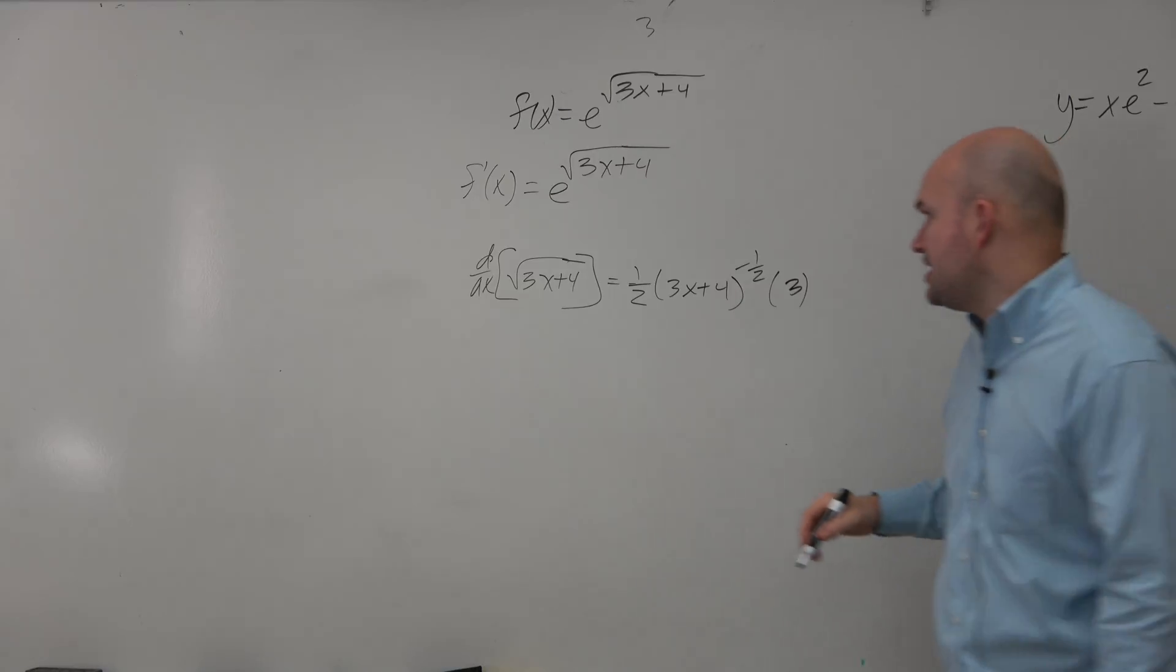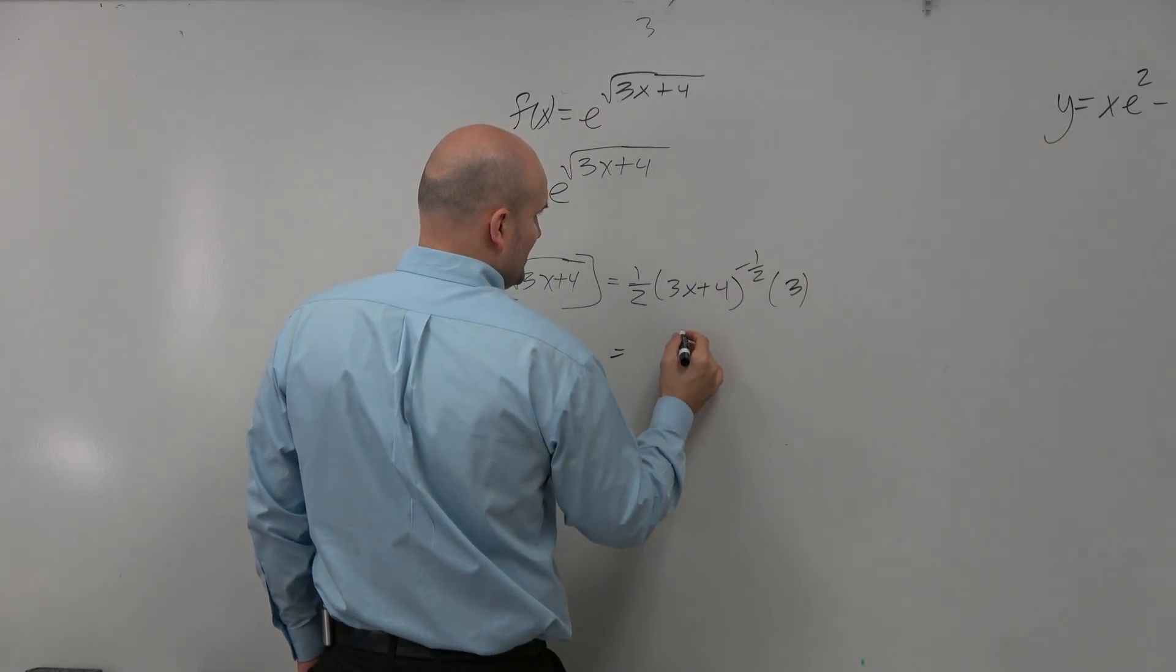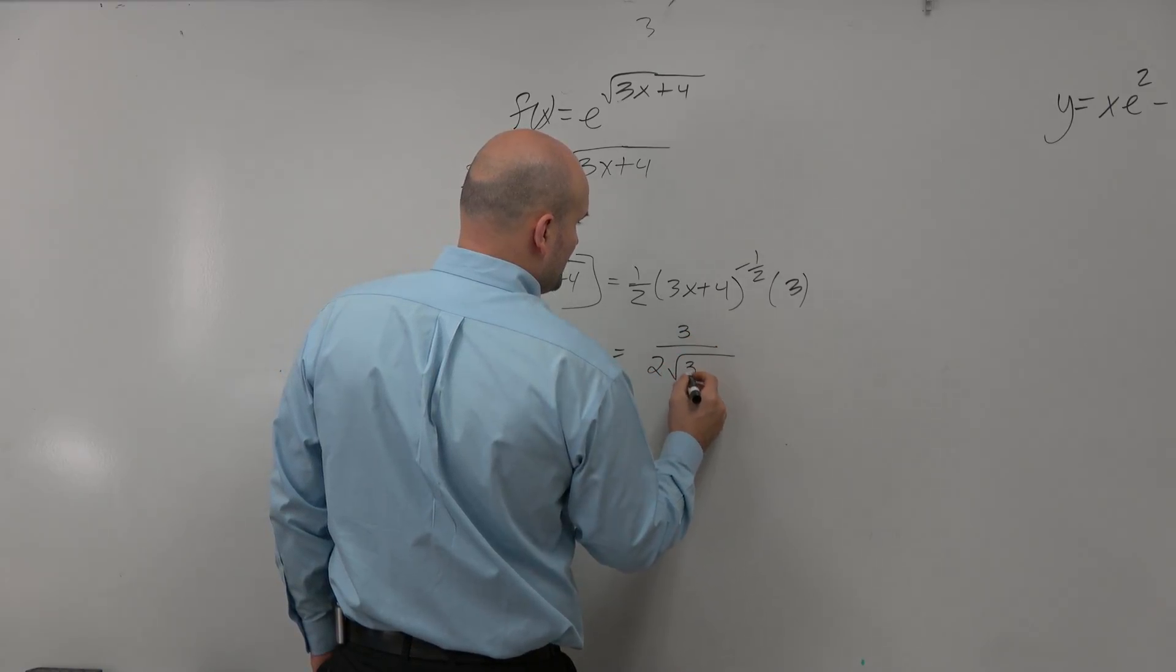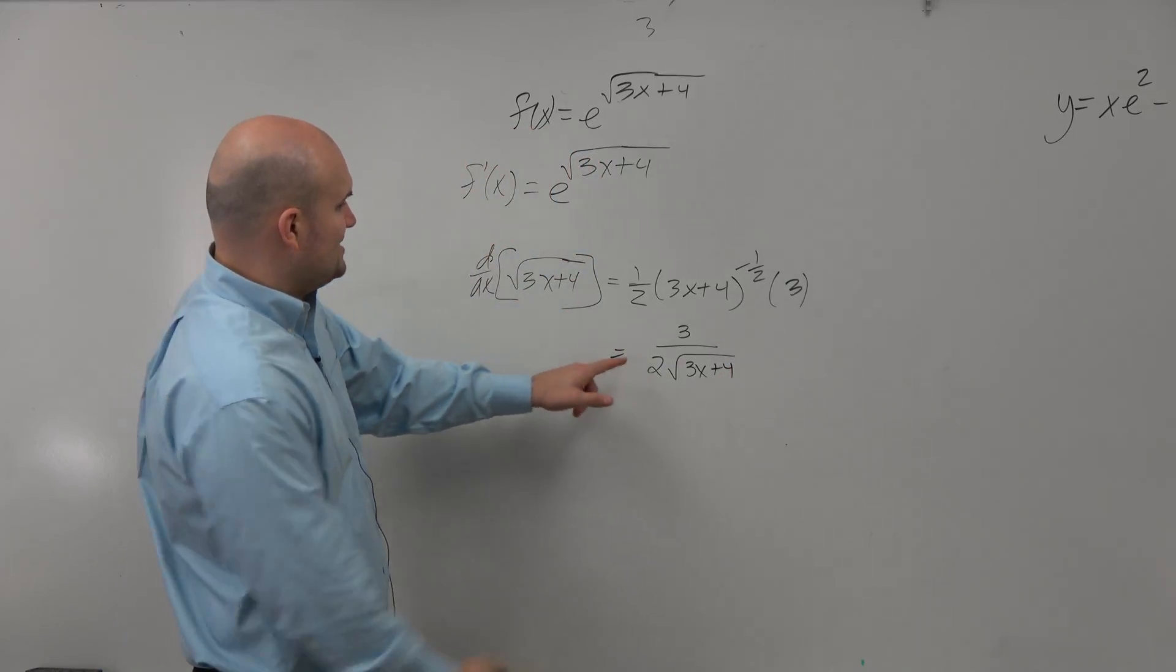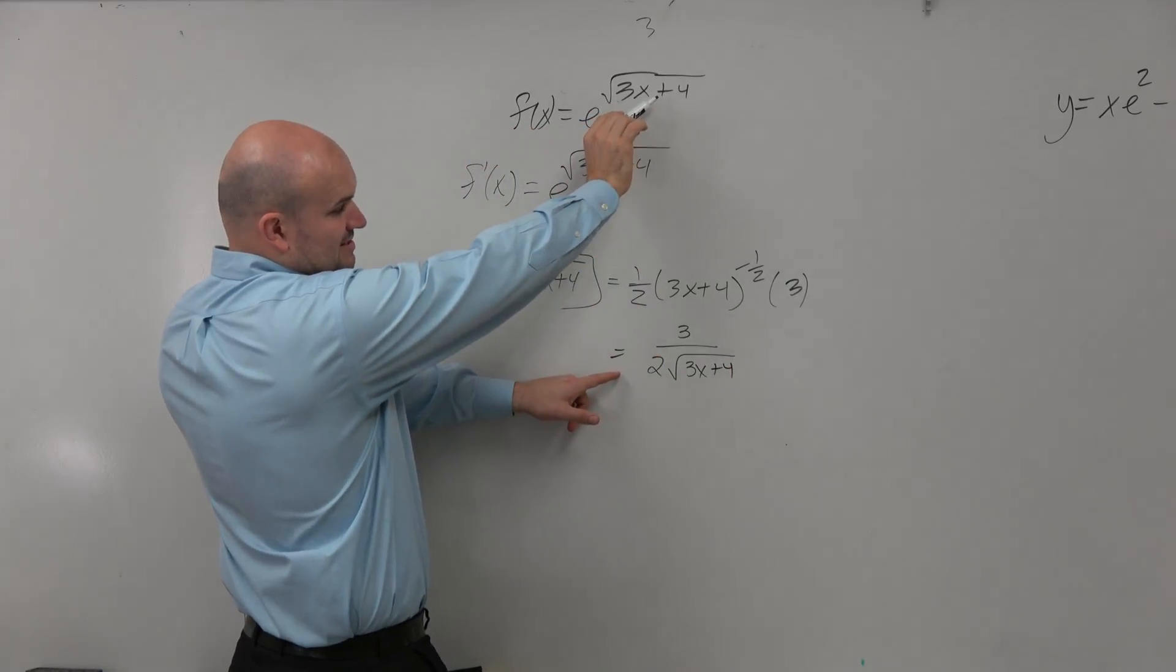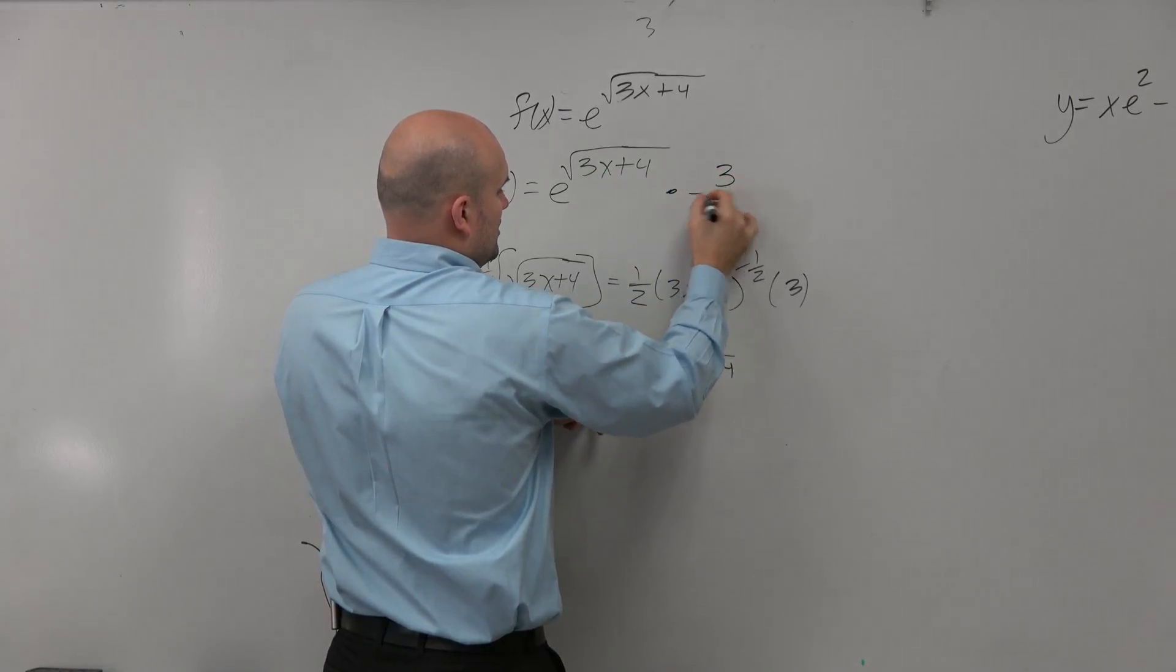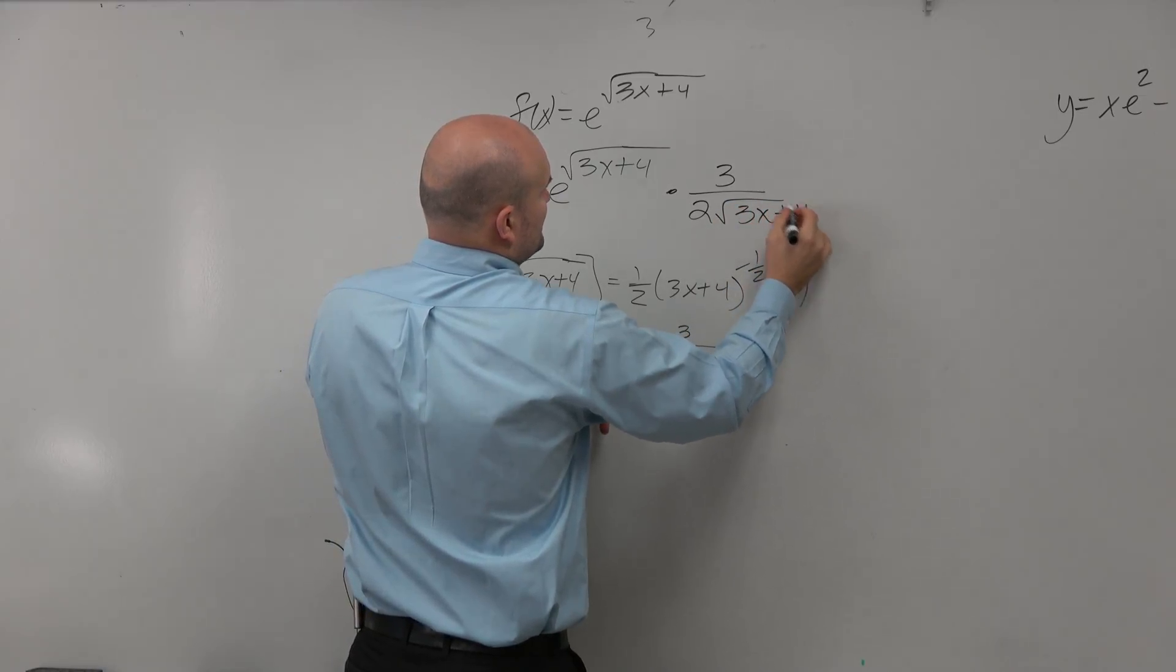So basically, what we'd have is the chain rule. If I was going to simplify this, I would have 3 over 2 times the square root of 3x plus 4. So that's the derivative of my inside function. I'm going to multiply that over here. So it's going to be times 3 over 2 square root of 3x plus 4.